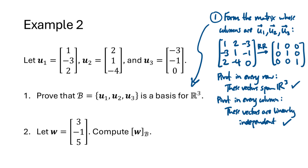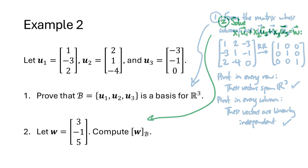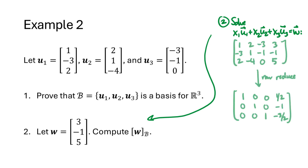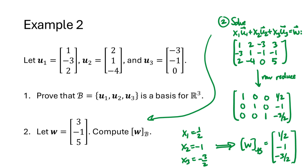Notice the process here is a bit different from Example 1 because this time we're talking about R^3 rather than a subspace. For part 2, to find the coordinates of w = (3, -1, 5), we solve the equation x1*u1 plus x2*u2 plus x3*u3 equals w. We set up and row reduce the augmented matrix and get x1 equals one-half, x2 equals negative 1, and x3 equals negative three-halves. The coordinate vector w sub B is (1/2, -1, -3/2).